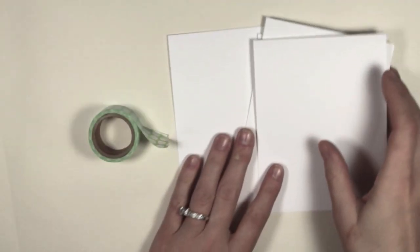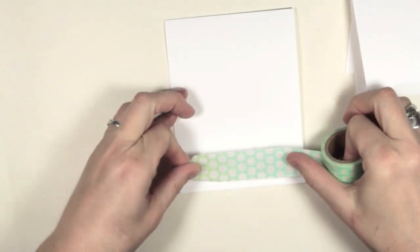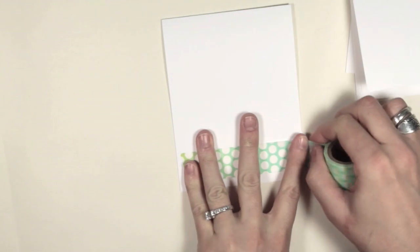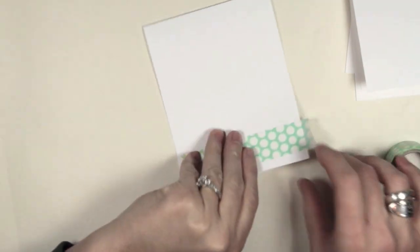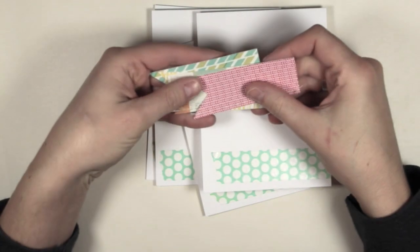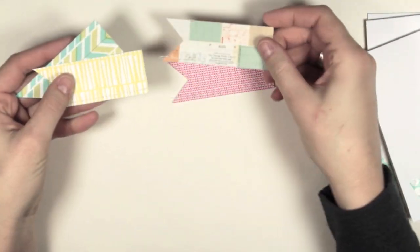Next, I've cut and scored four A2 size card bases. I'm taking the washi tape found in the card set, tearing off a strip, and applying that to the bottom of each of the cards.